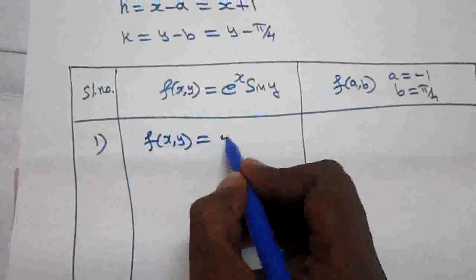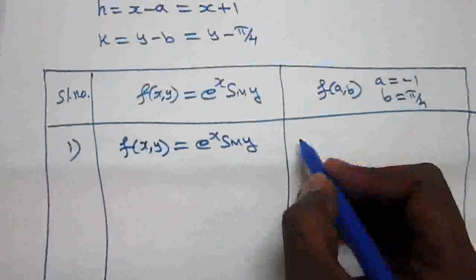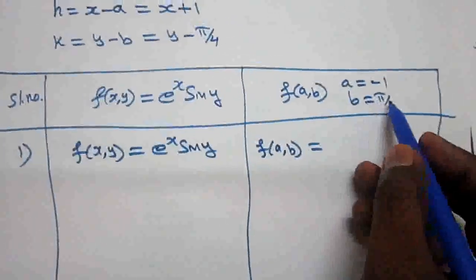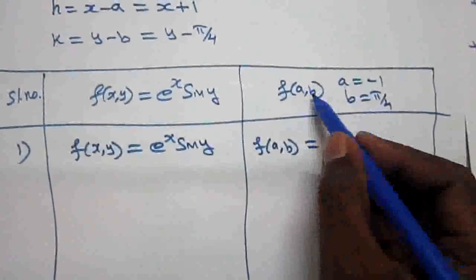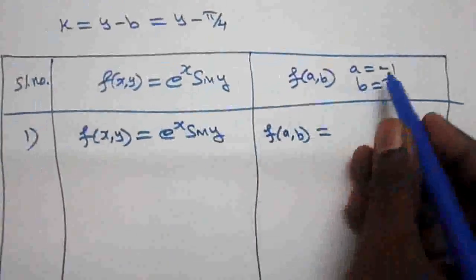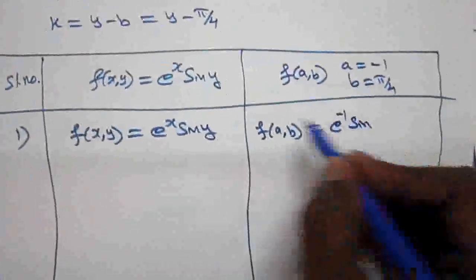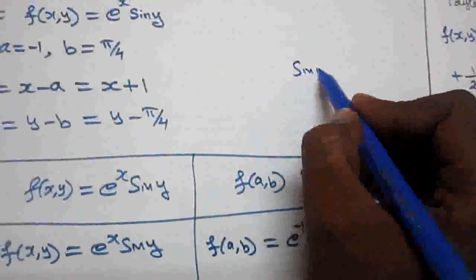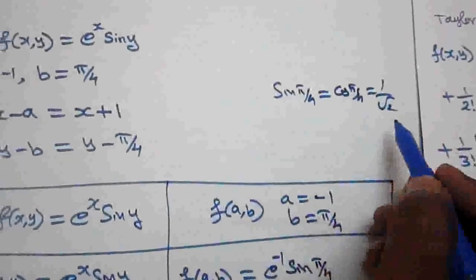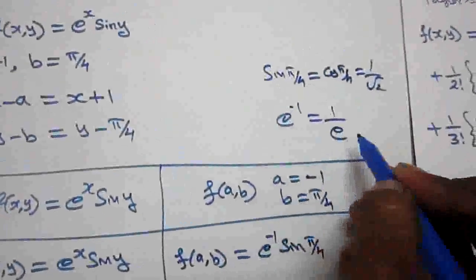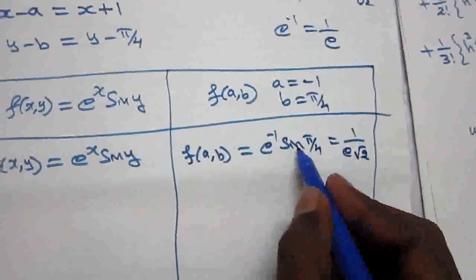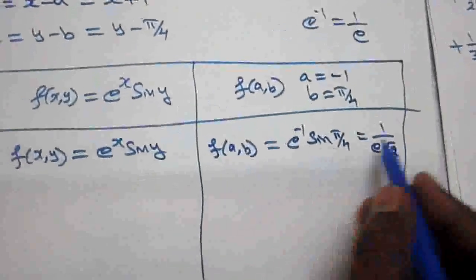Substituting x = −1 and y = π/4 into f(x,y) = e^x · sin(y): we get e^(−1) · sin(π/4). Since e^(−1) = 1/e and sin(π/4) = 1/√2, we have f(a,b) = 1/(e√2).